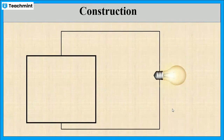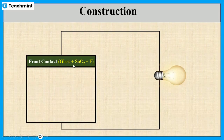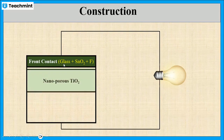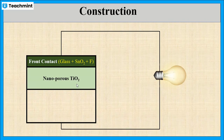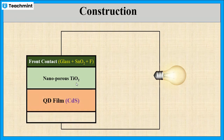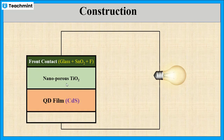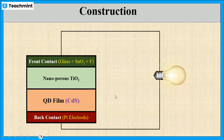Let us see the construction of quantum dot solar cells. It contains glass with fluorinated tin oxide (SnO₂) at the top as a front contact, followed by a nanoporous titanium oxide (TiO₂) layer. Note that SnO₂ stands for stannic oxide or tin oxide, while TiO₂ stands for titanium oxide. Below this titanium oxide layer, a film of quantum dots is placed — usually nano-sized cadmium sulfide (CdS) is used. At the bottom, a noble metal like platinum is placed as the back contact.